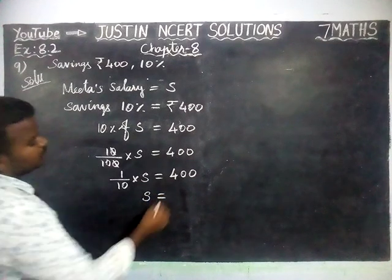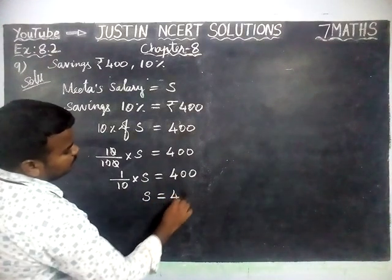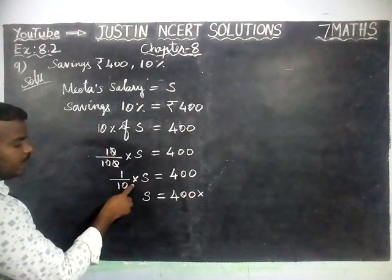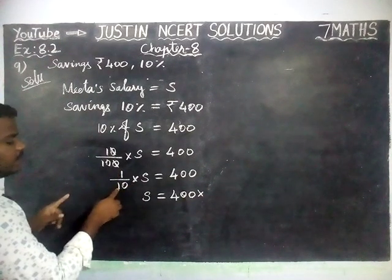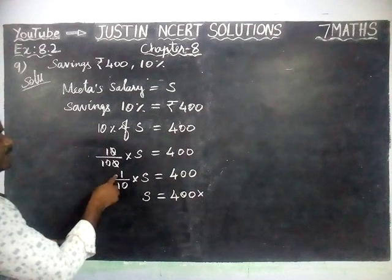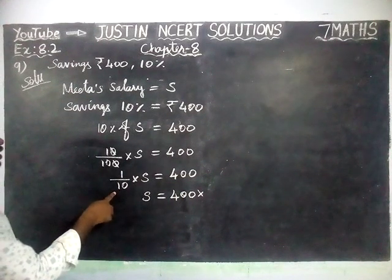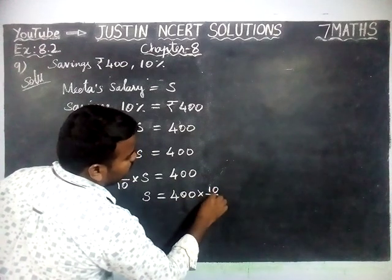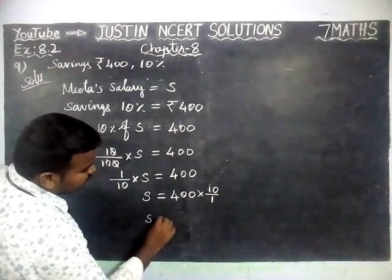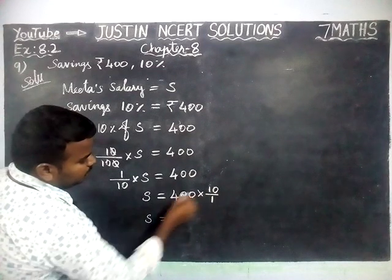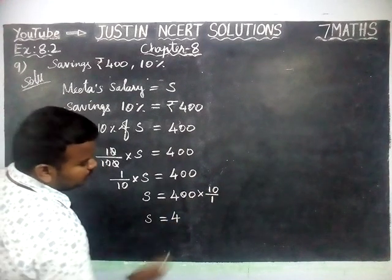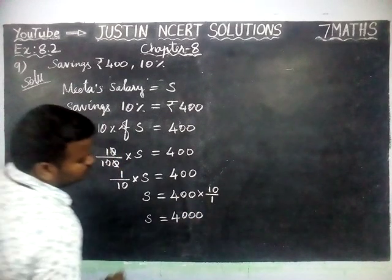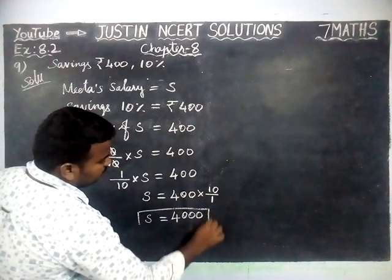Now, S is equal to Rs. 400. Since 1 by 10 is on the right-hand side, I am going to take it to the right-hand side. When taking the fraction, it will convert into its reciprocal. Reciprocal of 1 by 10 is equal to 10 divided by 1. So, S is equal to 4 into 1 is 4, and there are 3 zeros — so S is equal to Rs. 4000.